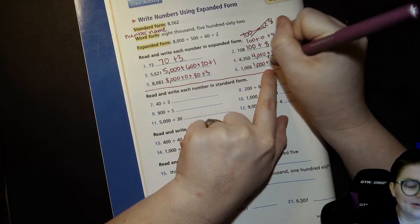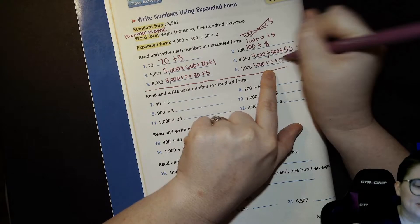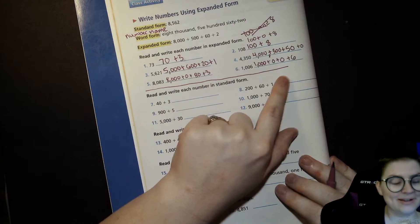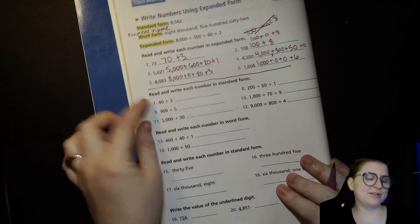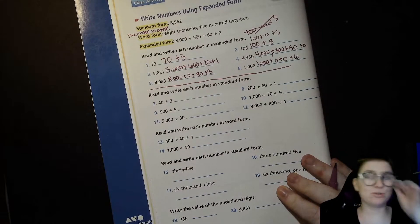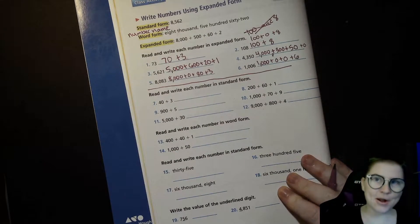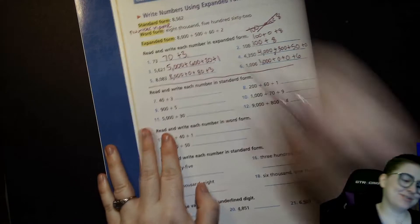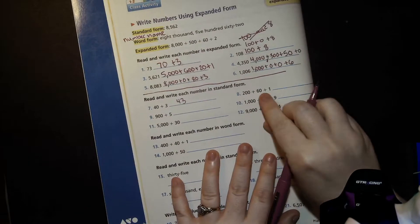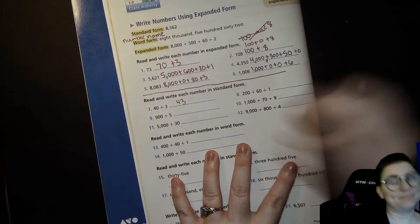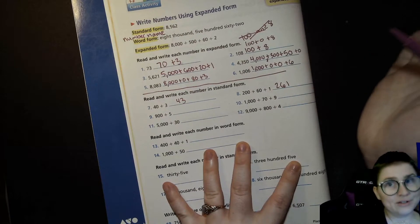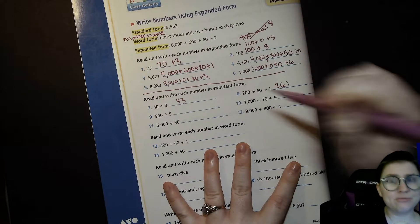Now we're going to turn these things from expanded form into standard form, so just regular number-looking numbers. Alright, 40 plus 3 is 43. 200 plus 60 plus 1 is 261. Feeling good about this? Go ahead and go on your own, stop here.